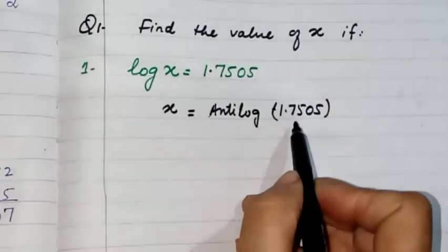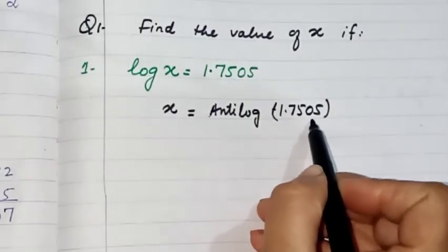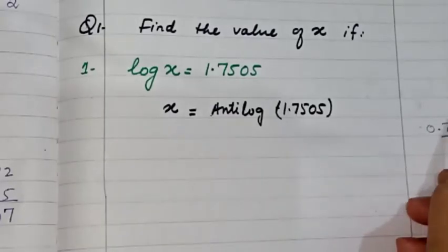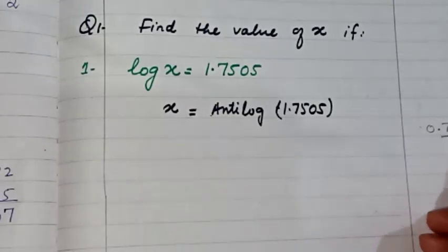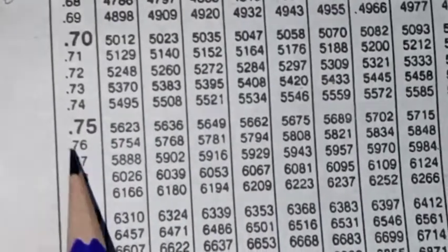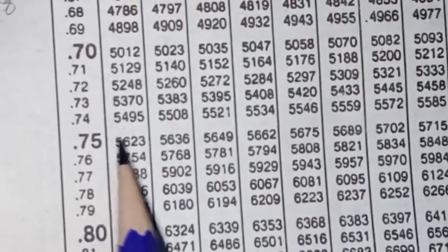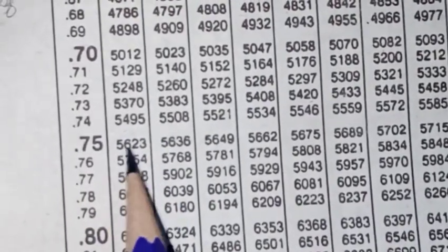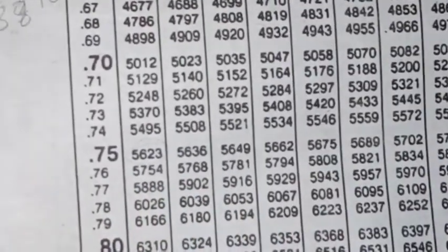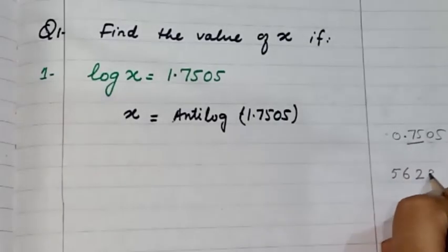We have to look for the mantissa part. We have to go for 0.75 in the anti-log table, then for column 0. We get the value 5623, which we write in the rough column.